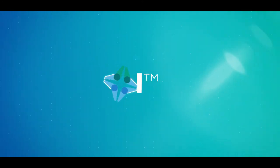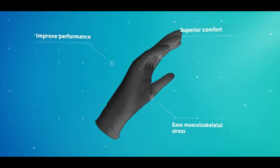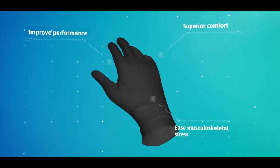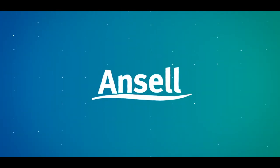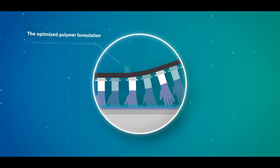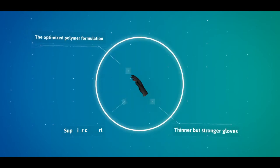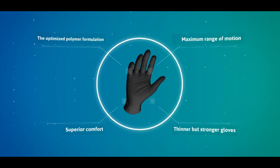Our Ergoform technology allows us to engineer more comfortable gloves that improve performance and ease musculoskeletal stress that could lead to injuries. At Ansell, we designed the ergonomic gloves using the optimized polymer formulation with manufacturing processes to develop thinner but stronger gloves for superior comfort and maximum range of motion.